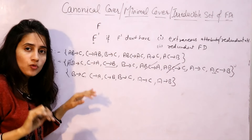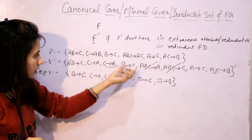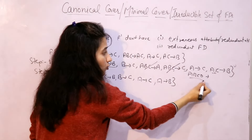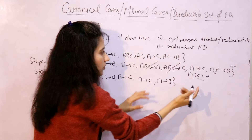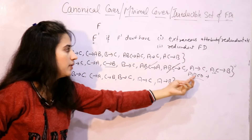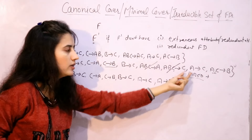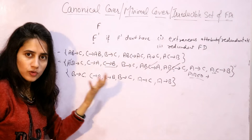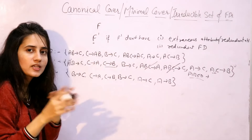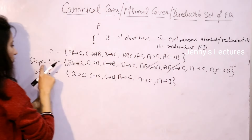Also note: after removing the extraneous attribute, it is not compulsory that the left-hand side will have a single attribute. For example, if ABCD → E is given and only C is extraneous, the left-hand side after removal would be ABD — still three attributes. It depends how many attributes are given and how many are extraneous. The right-hand side is always single attribute because we applied the splitting rule.